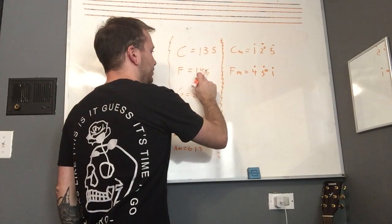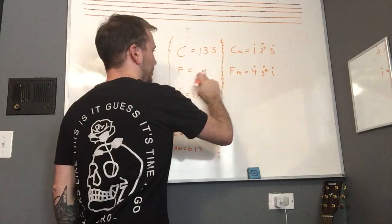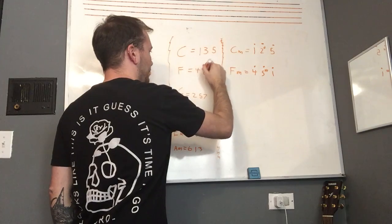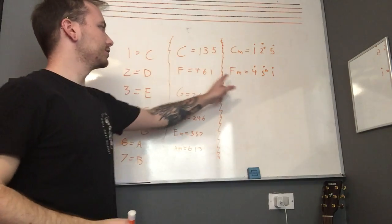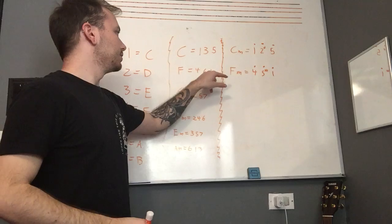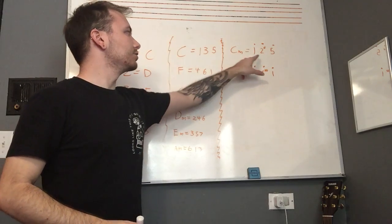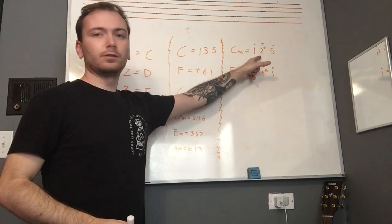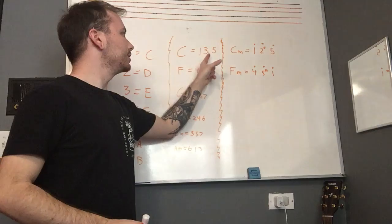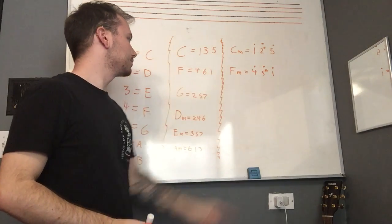So the difference between, let me write it like this so it's a little bit more apparent. The difference between F major and F minor, again, is that middle note. And you might notice it just goes down one to the sharp note. So three turns into two sharp, six turns into five sharp.